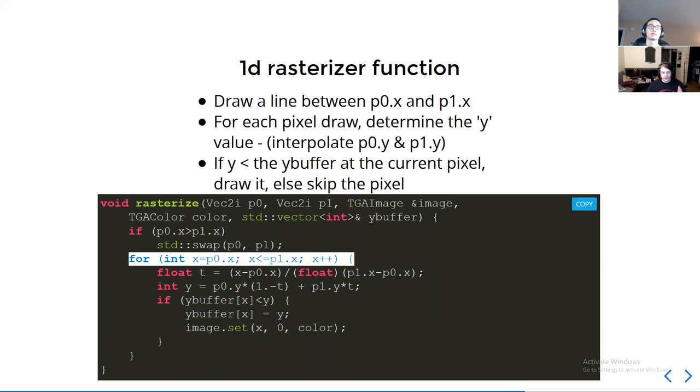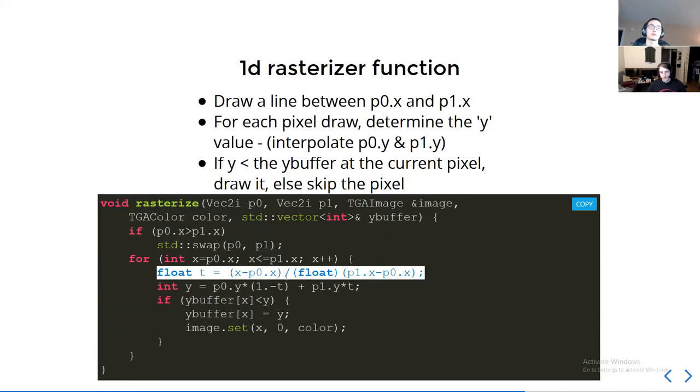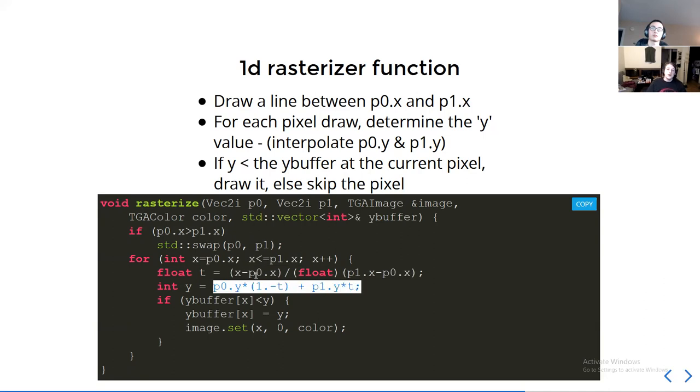We iterate through each point, each pixel between the X value of P0 and P1. So if we have points at four and at 12, we'll go 4, 5, 6, 7, 8, 9, 10, 11, 12. Then at each point, we need to calculate this T value. This T value represents the interpolation between the two points, and we use this to determine the Y value. Because we're moving along this line segment on the X axis, we need to figure out how far on the Y axis we are. We need to find the T to find out how far along the line segment we are, because then we can use that to determine how far into the scene we are, and that is our Y value here. This is our depth into the scene.